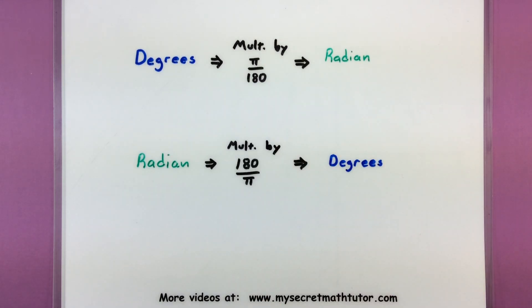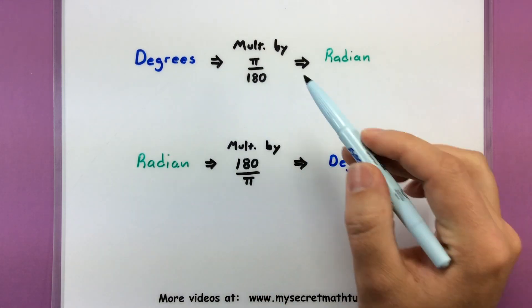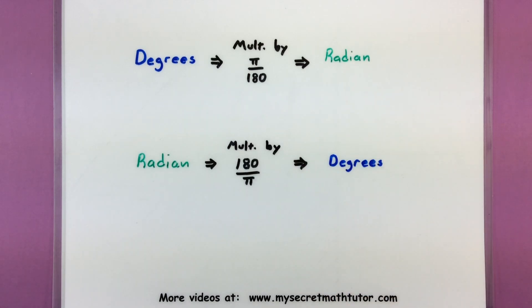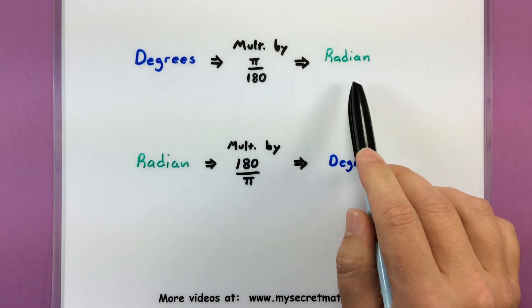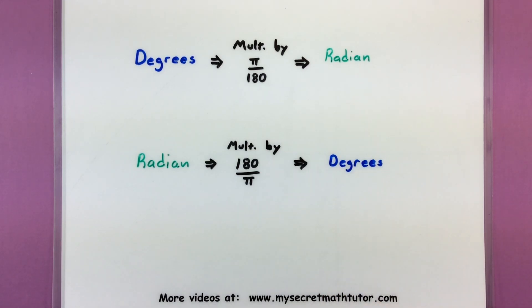And you may be wondering, wait a minute, why does that fraction even work? Well pi and 180 are actually equal to one another, so this is what we call our unit fraction. And it's essentially converting our units in the background so that we can get it into the proper radians or into degrees.